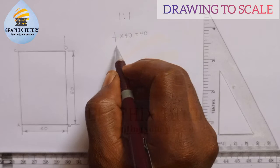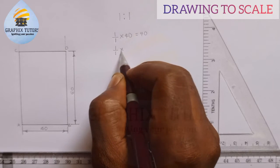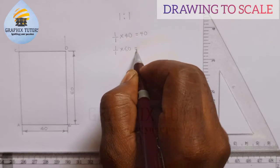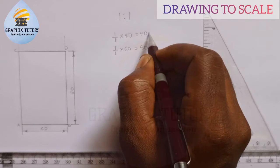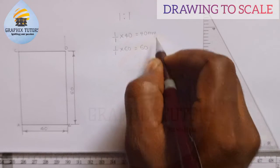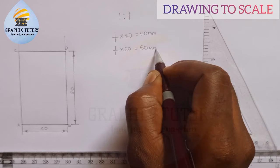So if I want to apply this it will be one over one of 60, and that will give us 60. Knowing fully well we are all working in millimeters, depending on what you are told to do.